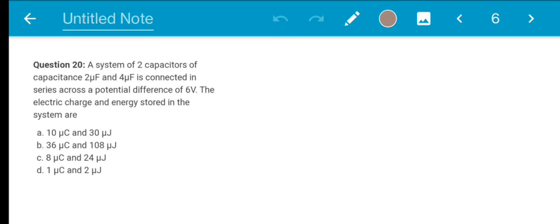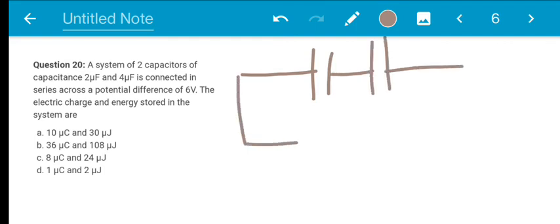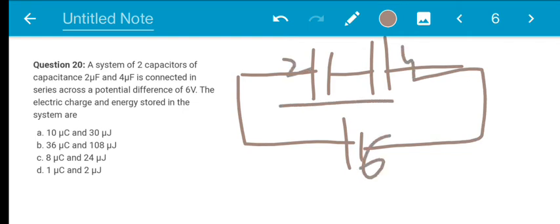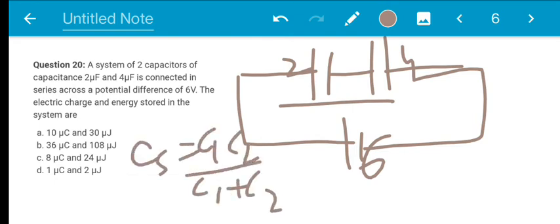Last question: a system of 2 capacitors of capacitance 2 microfarad and 4 microfarad is connected in series across a potential difference of 6 volts. The electric charge and energy is stored in the system. First, in this situation, draw on the capacitors. We have two capacitors here. This is the potential difference of 6 volts. This is 2 microfarad, this is 4. This is 6 volts. If we have series here, effective capacitance formula C1 C2 divided by C1 plus C2. So 4 into 2, 8 divided by 4 plus 2, 6,